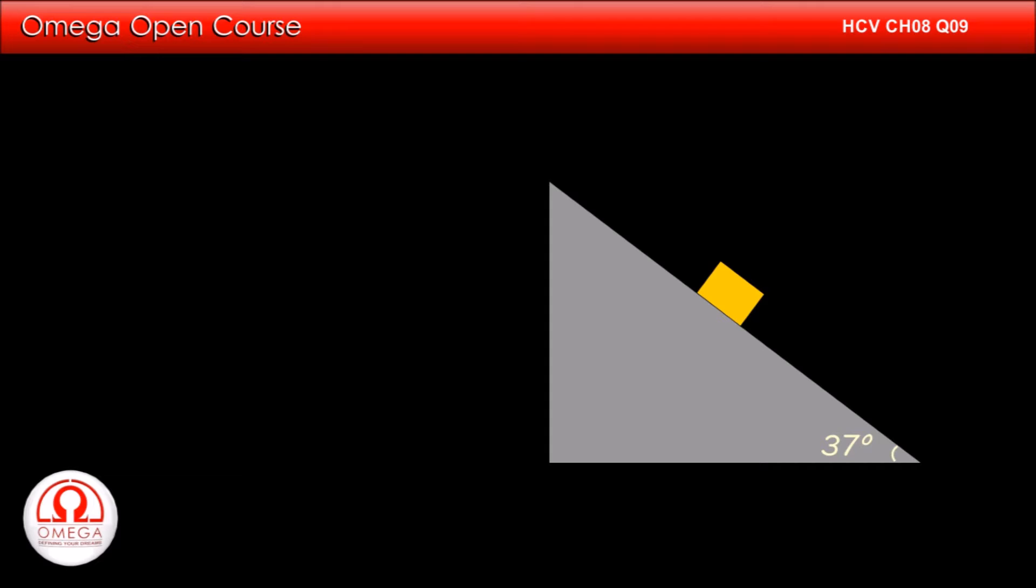Let us draw the free body diagram of the block. Gravitational force of mg acts on the block in vertically downward direction. Component of gravity along the incline is mg sin theta and perpendicular to the incline is mg cos theta.